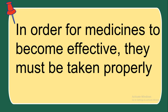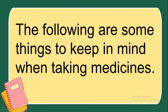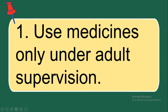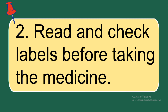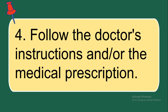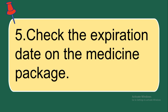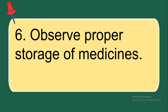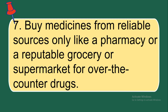In order for medicines to become effective, they must be taken properly. The following are some things to keep in mind when taking medicines: 1. Use medicines only under adult supervision. 2. Read and check labels before taking the medicine. 3. Consult with a doctor first. 4. Follow the doctor's instructions and/or the medical prescription. 5. Check the expiration date on the medicine package. 6. Observe proper storage of medicines. 7. Buy medicines from reliable sources only, like a pharmacy or a reputable grocery or supermarket for over-the-counter drugs.